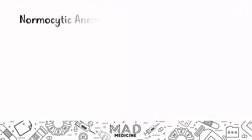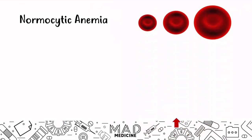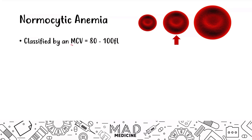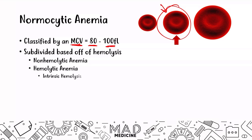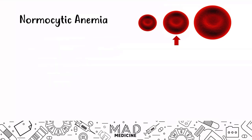Let's talk about normocytic anemia really quickly. Just a recap: normocytic anemia is classified by an MCV that is 80 to 100, which is a normal red blood cell size. These are going to be subdivided based off of hemolysis — you can have non-hemolytic anemias and hemolytic anemias based off of intrinsic causes and extrinsic causes.